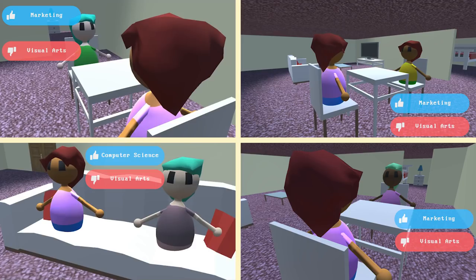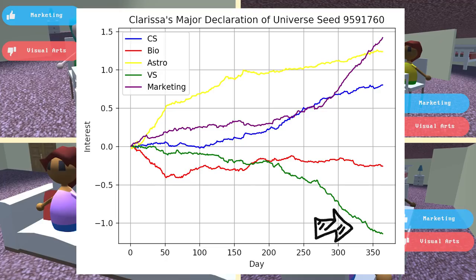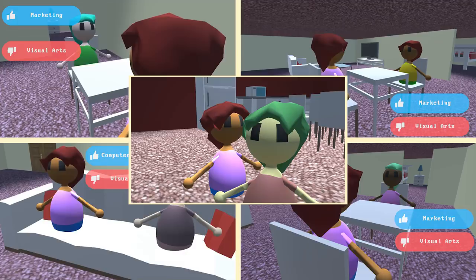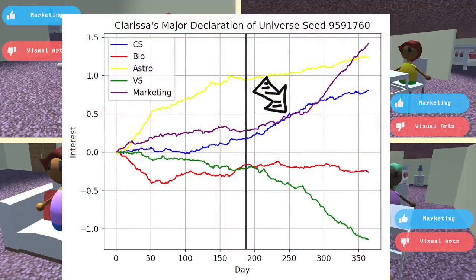So with these four most influential people in her life all disliking visual arts, naturally she grew to hate it as well. And of course, because three out of four of them liked marketing, and Ipilov was no longer a part of Clarissa's life, it was easy for the three of them to influence her decision in about 150 days.